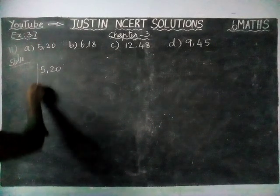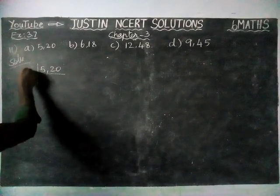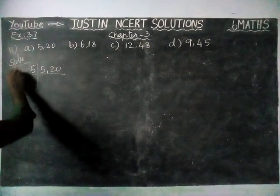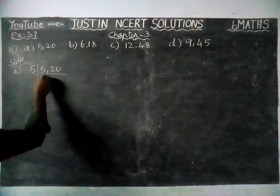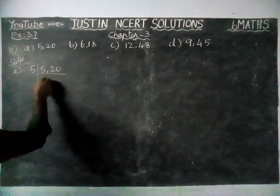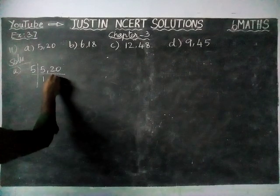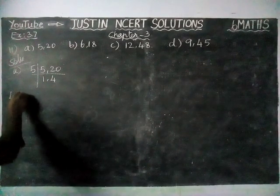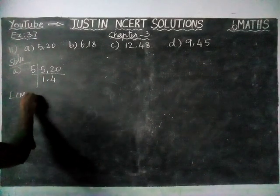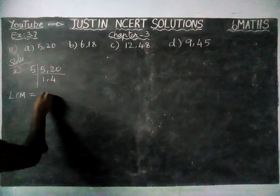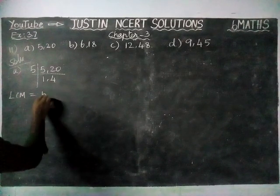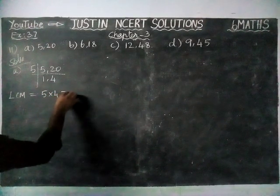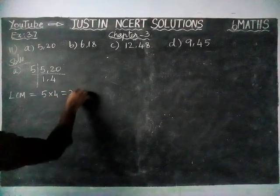5, 20. We are going to divide it by 5. 1, 5 is 5. 4, 5 is 20. So LCM is equal to 5 into 4, is equal to 20.